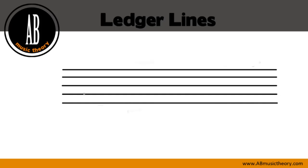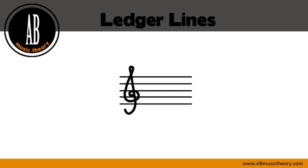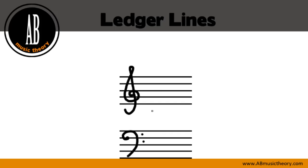Let me pull up two staffs to show you this note. The one below the treble clef staff is the note C, and the one above the bass clef staff is also called C. Take note — both C's are the very same note on the keyboard.